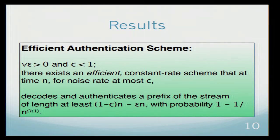As long as the noise is below this parameter c, we will be able to recover a prefix of the stream whose length is at least 1 minus cn up to small epsilon. And this succeeds except with polynomially small probability.